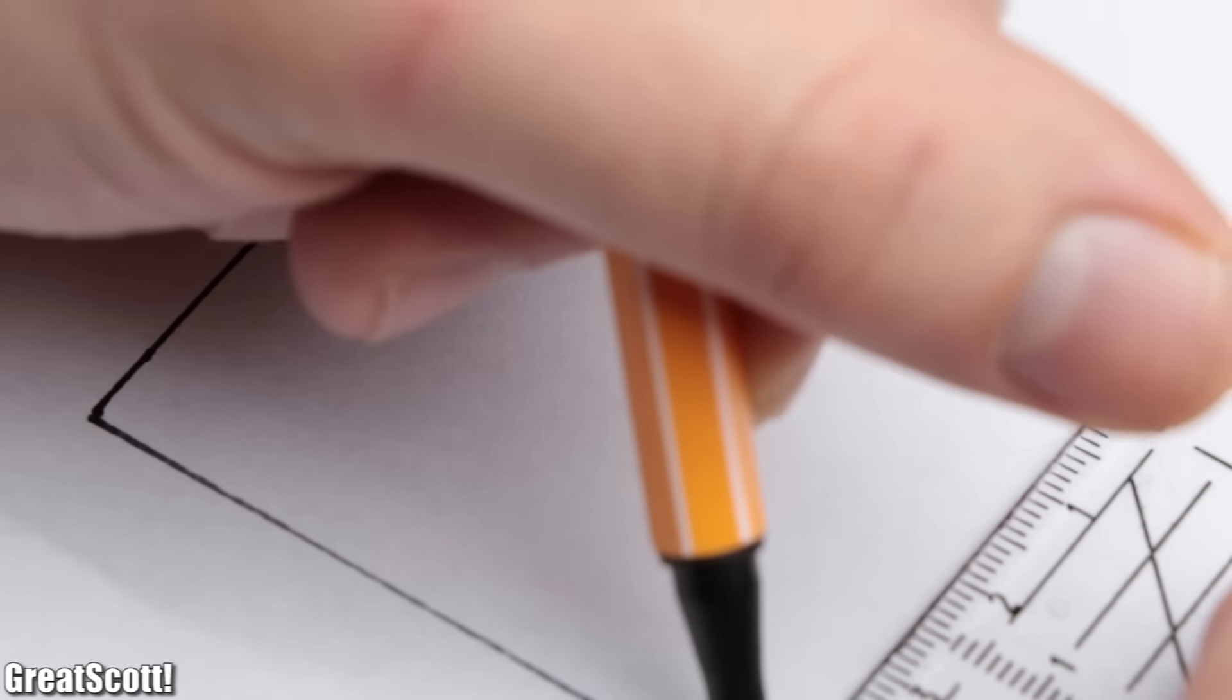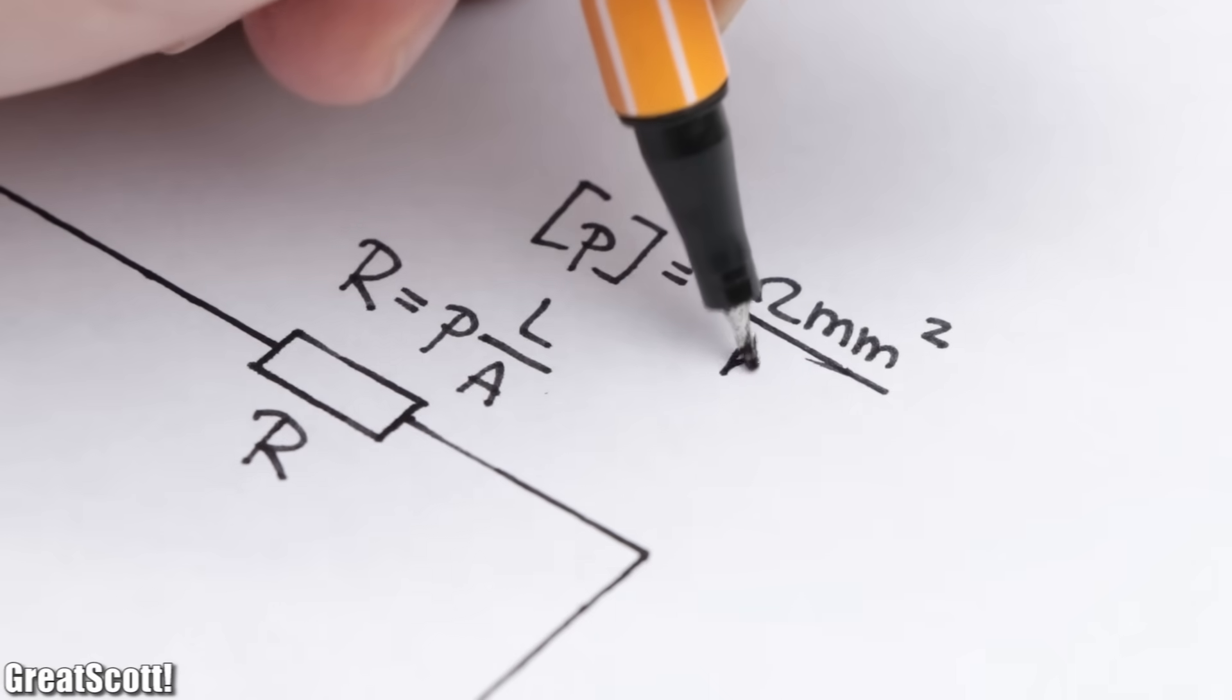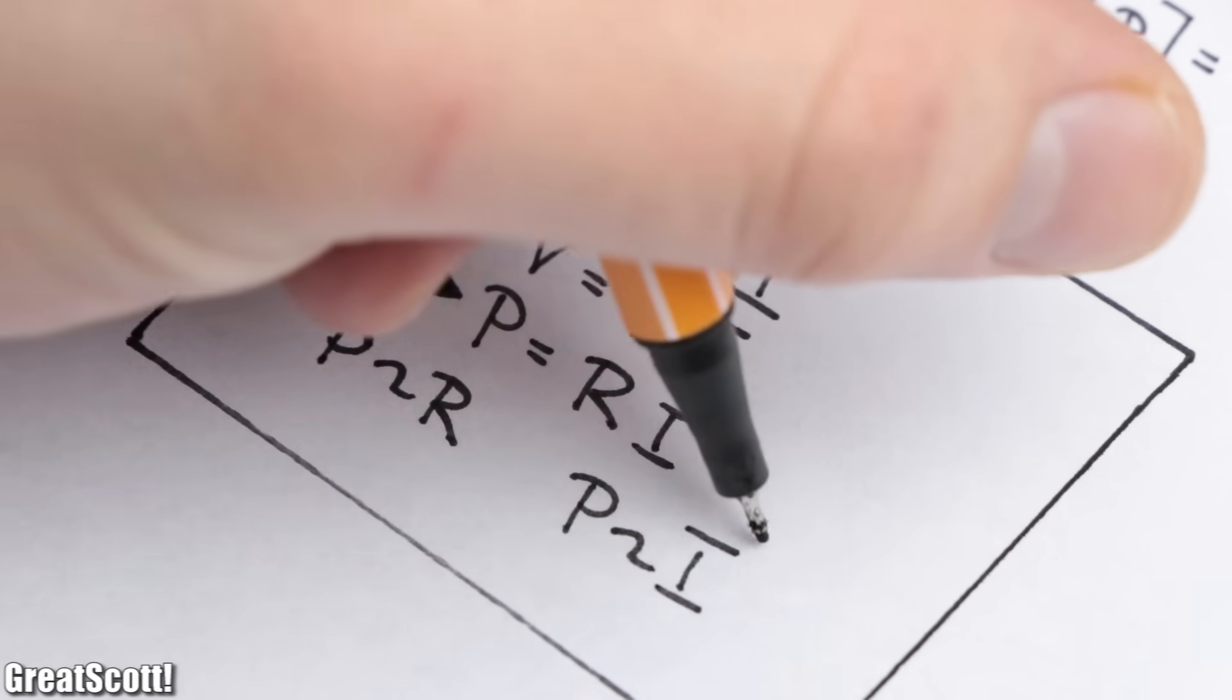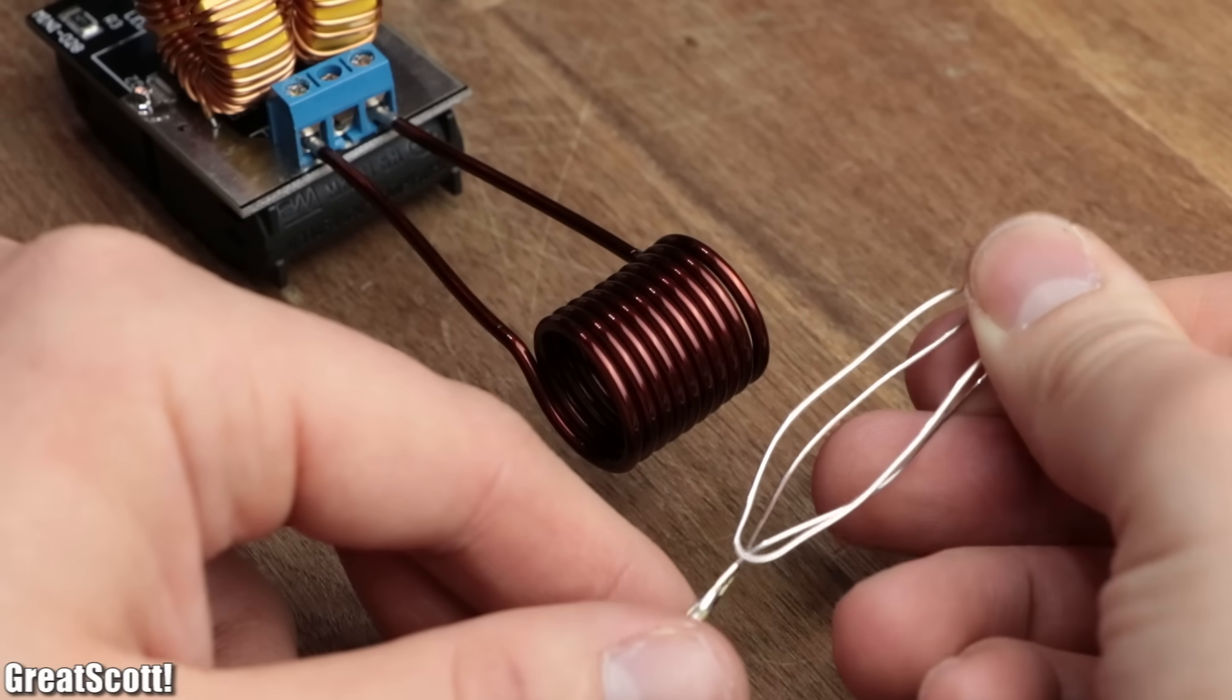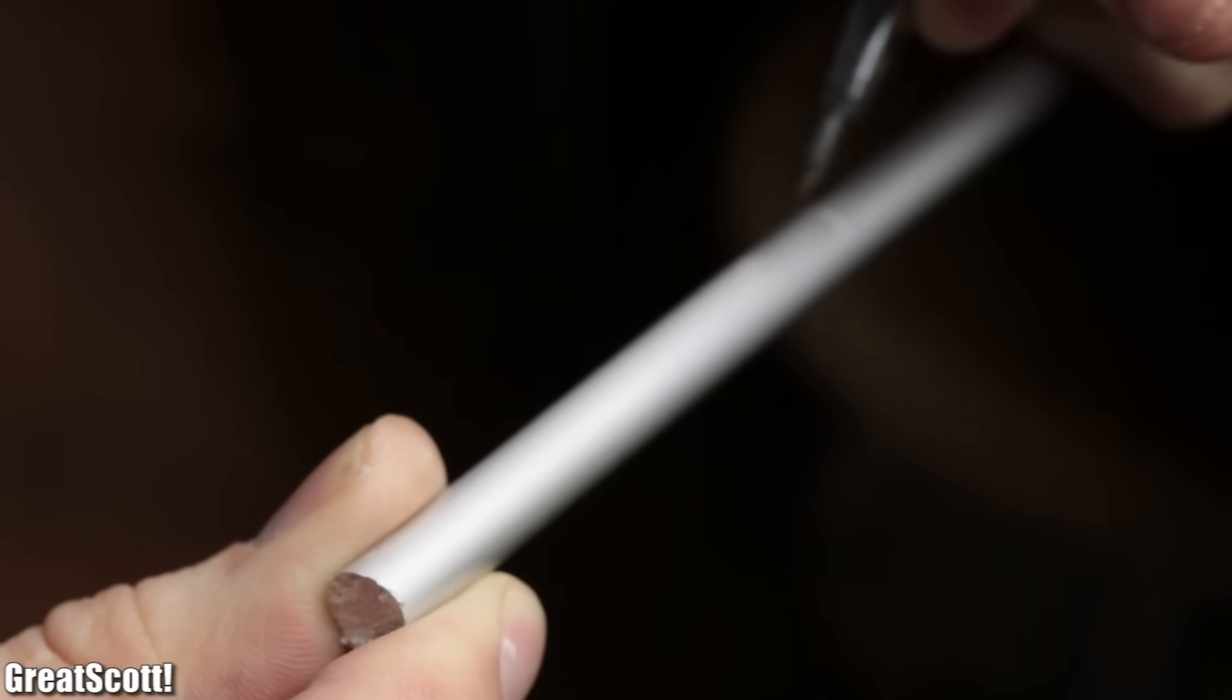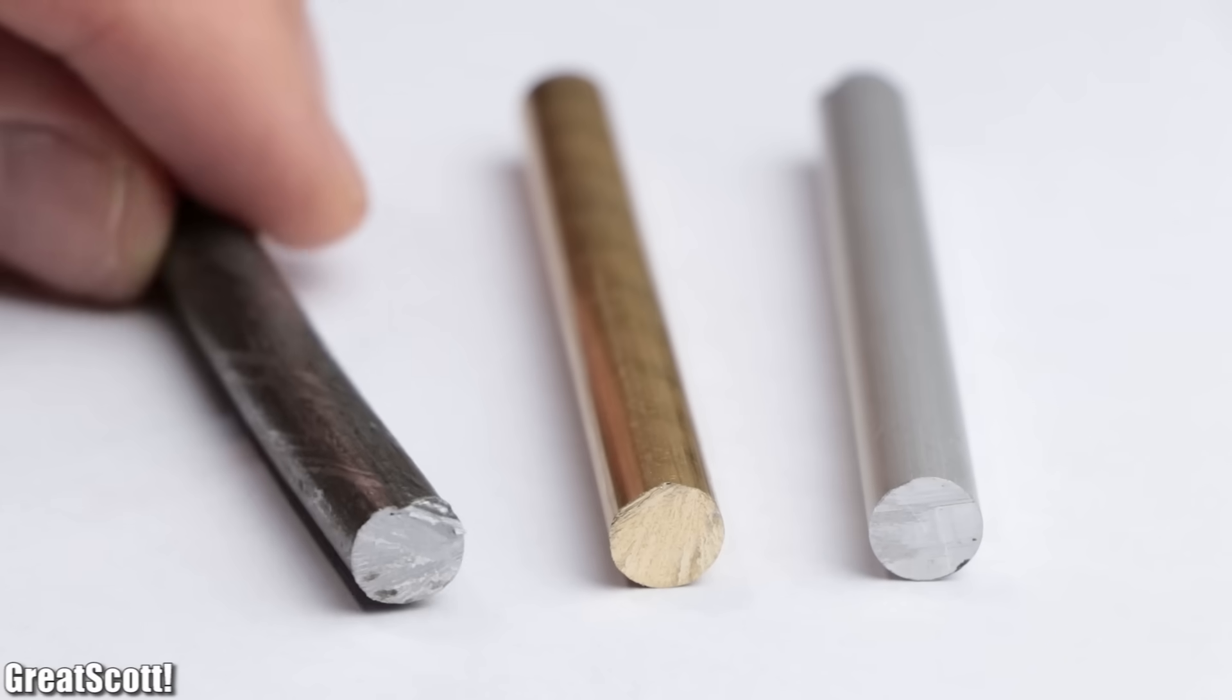Since the equivalent circuit for this arrangement is just a resistor based on the dimensions of the conductor, we can assume that the generated heat is proportional to the resistance and the flowing current. And now that we understand the basics of induction heating for a piece of wire as a loop, we can apply this knowledge to three different metals, which I brought into a smaller shape beforehand. Here we got aluminum, brass and iron.